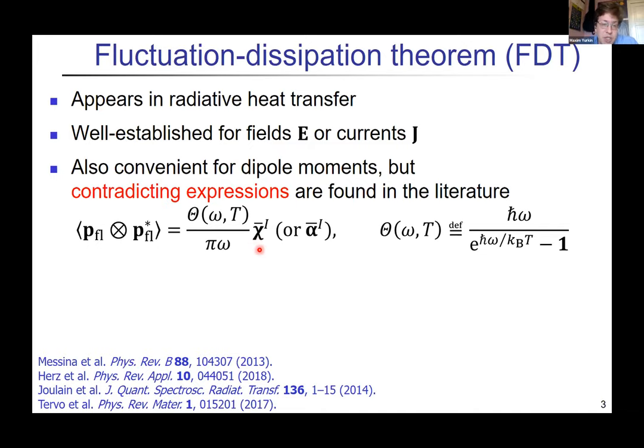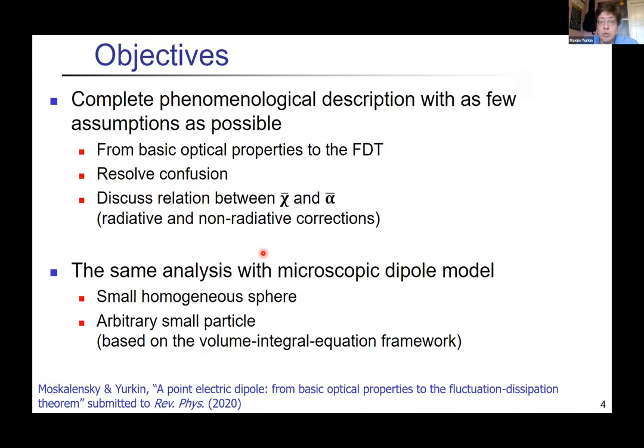Given all this introduction, our objective was to build a complete phenomenological description with a few assumptions to resolve some confusion and discuss the relation between χ and α, which can also be related to concepts of radiative and non-radiative corrections of polarizability which are often mentioned in the literature.